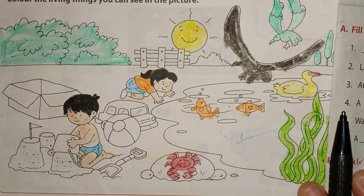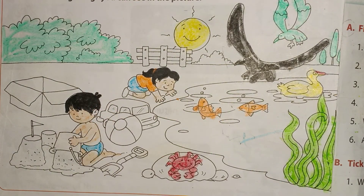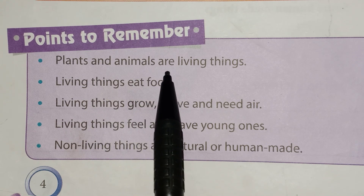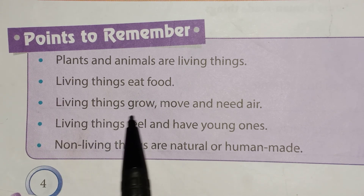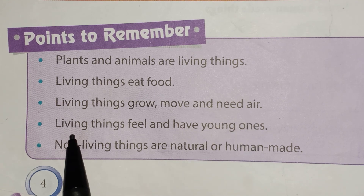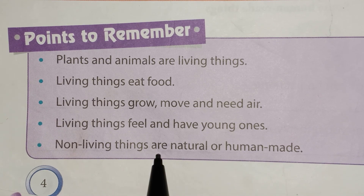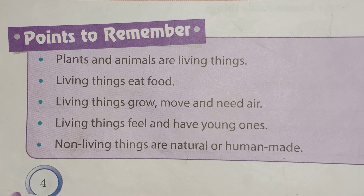On the same page there is an activity — you have to color the living things in the picture. Let's revise what we have learned: Plants and animals are living things. Living things eat food, grow, move, and need air. Living things feel and have young ones. Non-living things are natural or human-made. I hope you have understood the lesson. Thank you for watching — we will meet in the next video with the exercise of this same lesson.